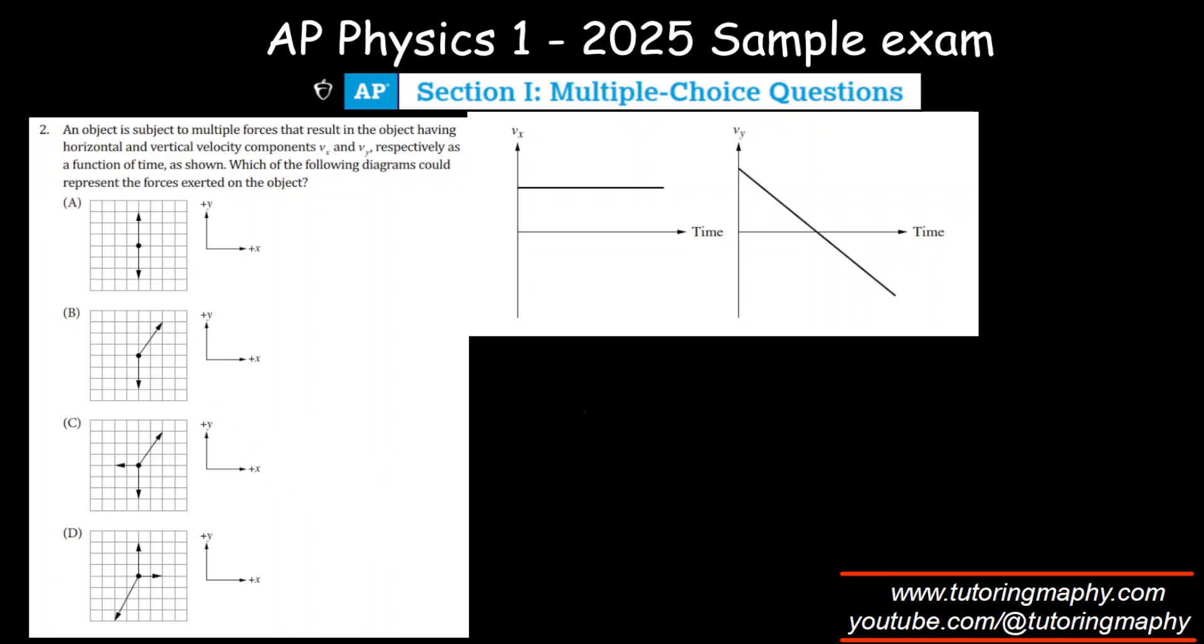Let's talk about this question. We are given a figure in which an object is subject to multiple forces that result in the object having horizontal and vertical velocity components as a function of time. Which of the following could represent the situation as a free body diagram?